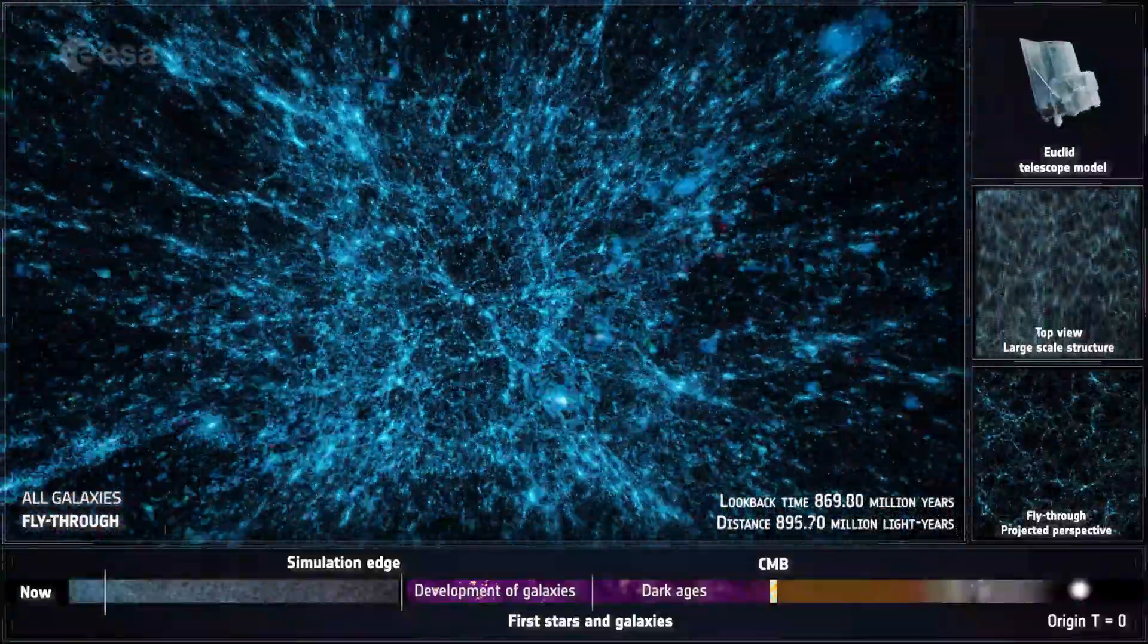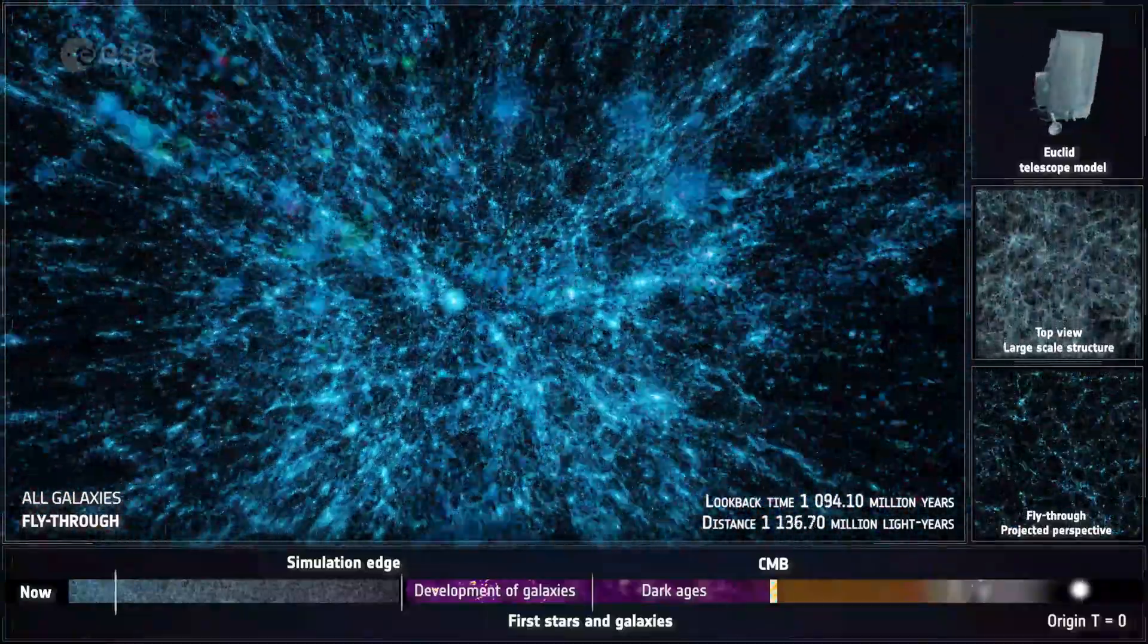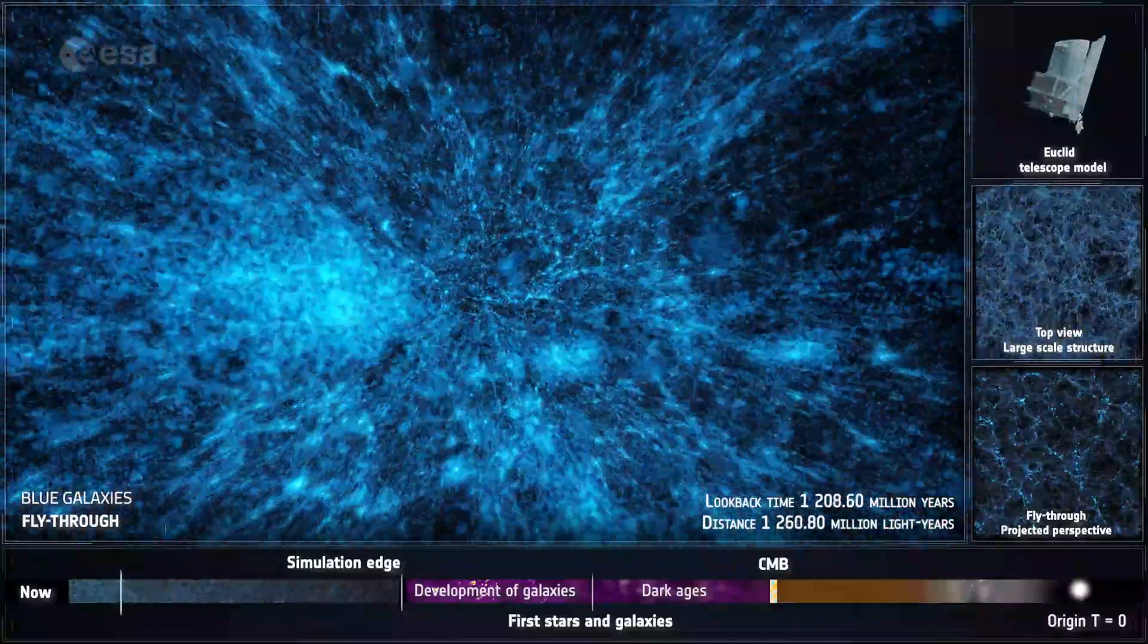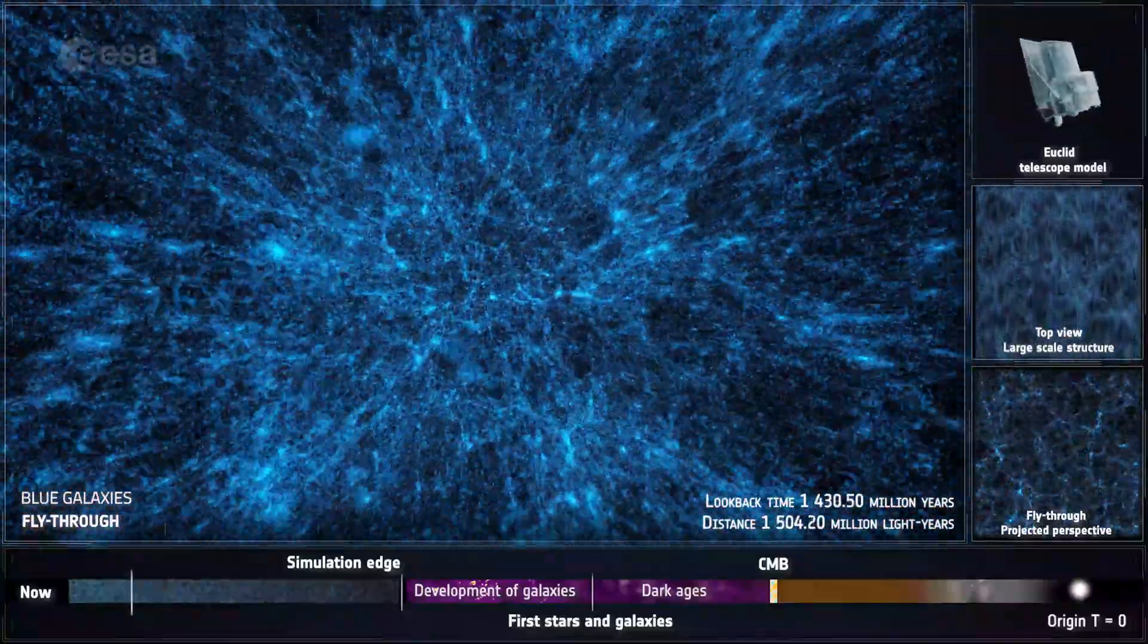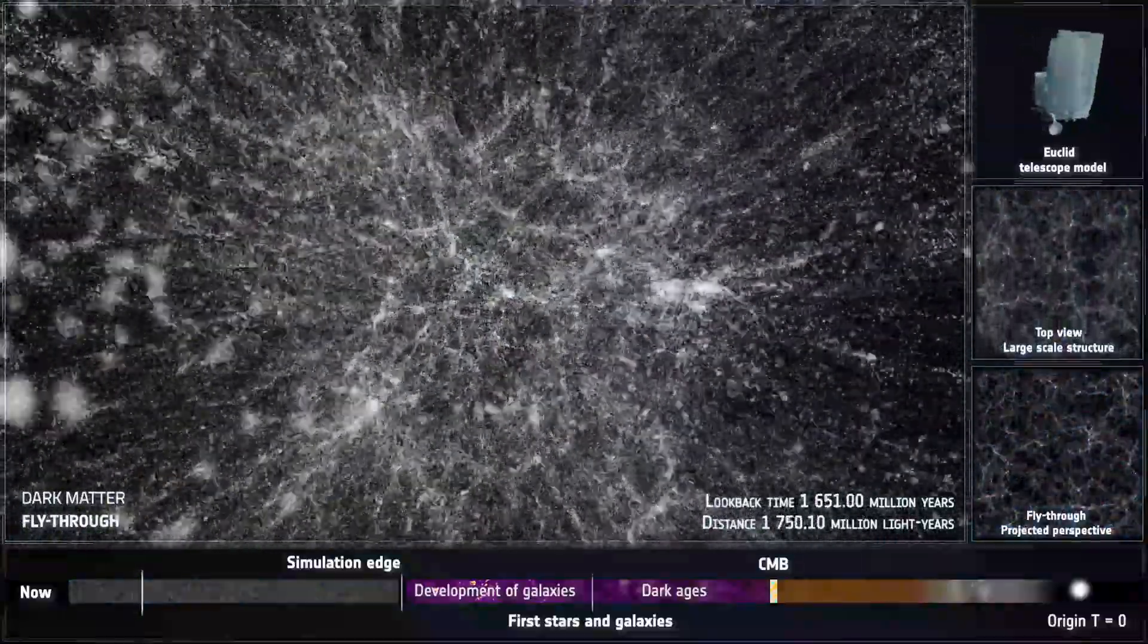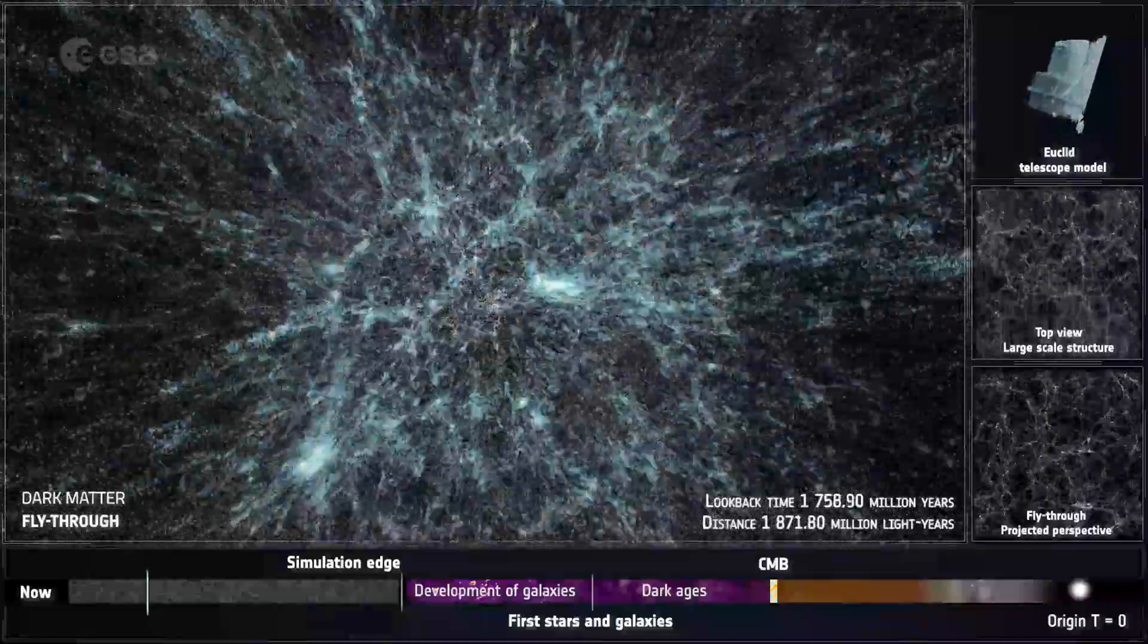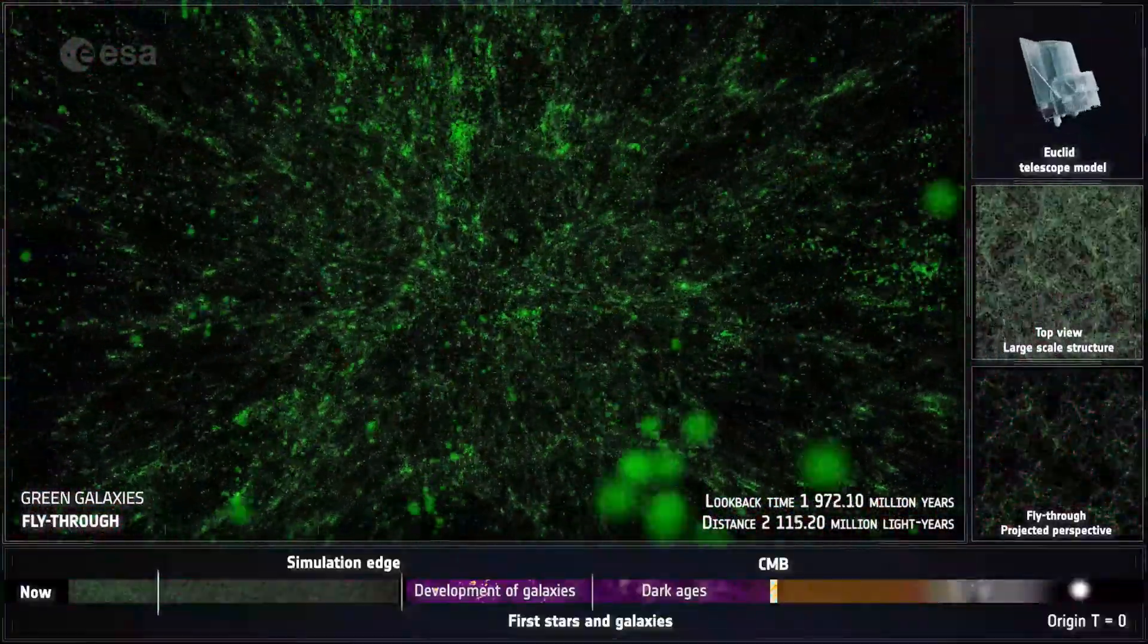Galaxies are traces of the dark matter distribution. In this visualization, they are shown with fake colors depending on some of their properties. Note how different types of galaxies trace the underlying dark matter distribution. They can be red, green, blue.